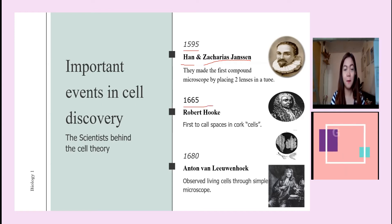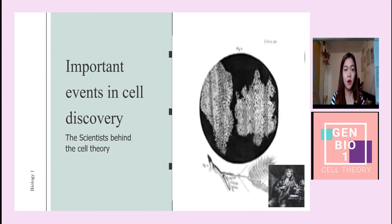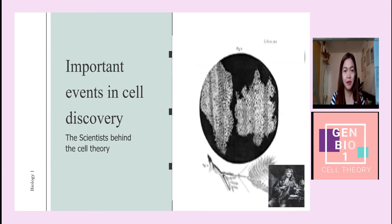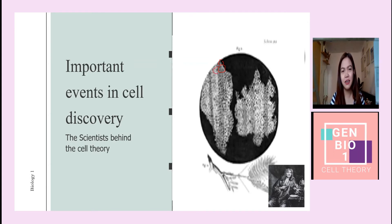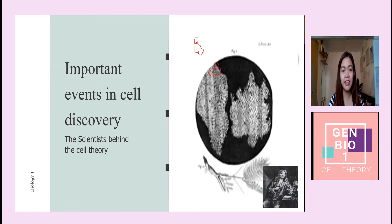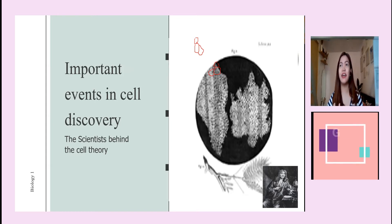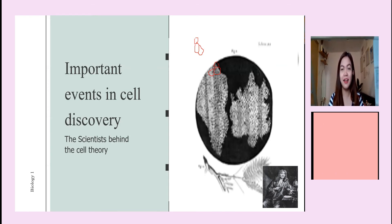In 1665, Robert Hooke used the microscope to examine a cork sample. He saw what you can see on screen — small boxes arranged together. It resembled the small rooms or 'cellulae' where monks lived, so he called them 'cells.' However, what he actually saw were dead cells, since cork is dead tissue. That's why they looked like empty boxes — he could only see the cell walls, since the interior had dried out.